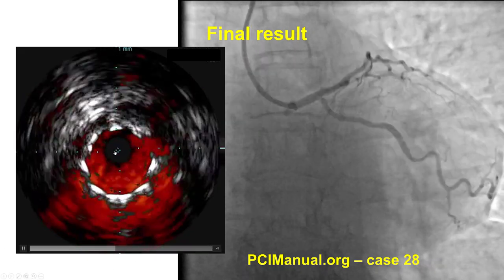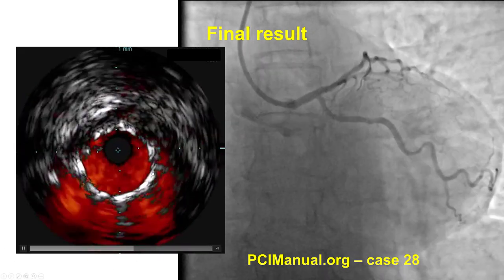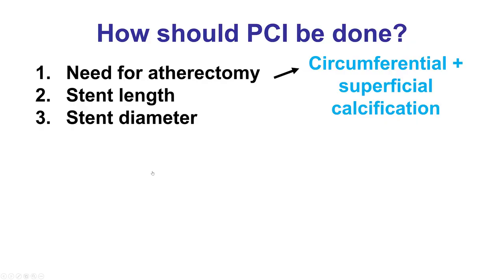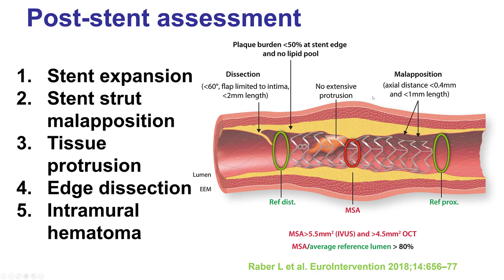IVUS can also be used to check the result of PCI. The second question is how PCI should be done, and the questions that IVUS can answer are: whether atherectomy may be needed, what is the stent length, and what is the stent diameter. Specifically for atherectomy, the presence of circumferential and superficial calcium favors performance of atherectomy.